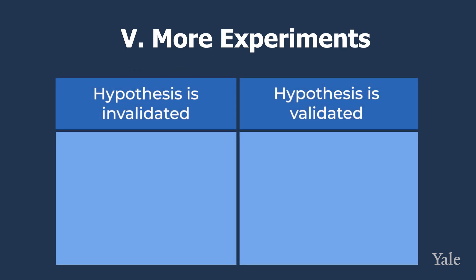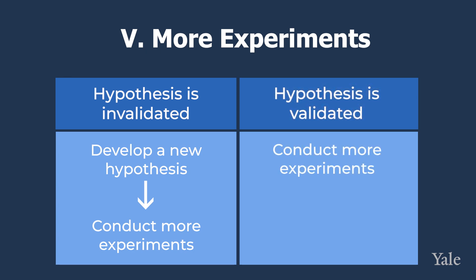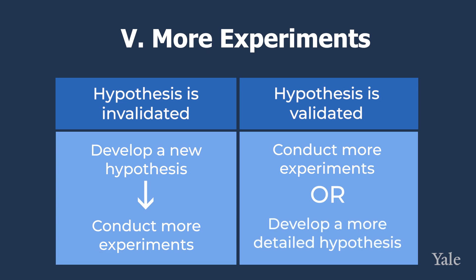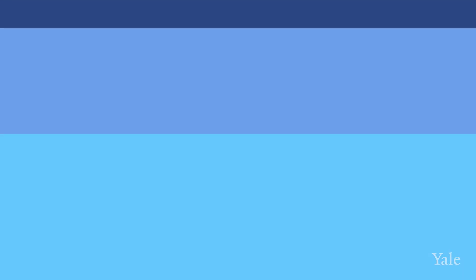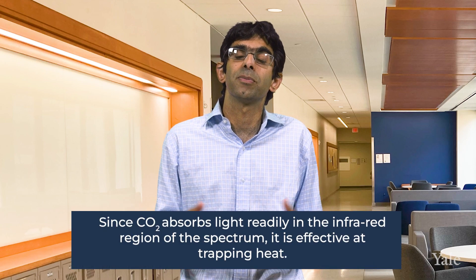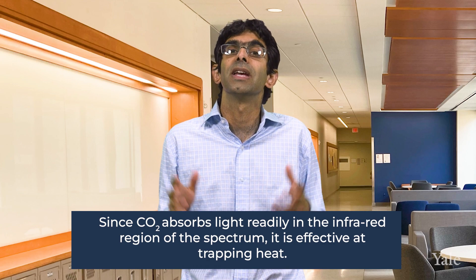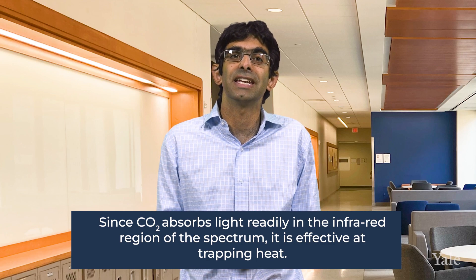If your hypothesis is invalidated, you may develop a new hypothesis to explain the initial observation. If your hypothesis is validated, you can do more experiments to further test it or develop a more detailed hypothesis. For example, you might hypothesize that since carbon dioxide absorbs light readily in the infrared region of the spectrum, it is effective at trapping heat.